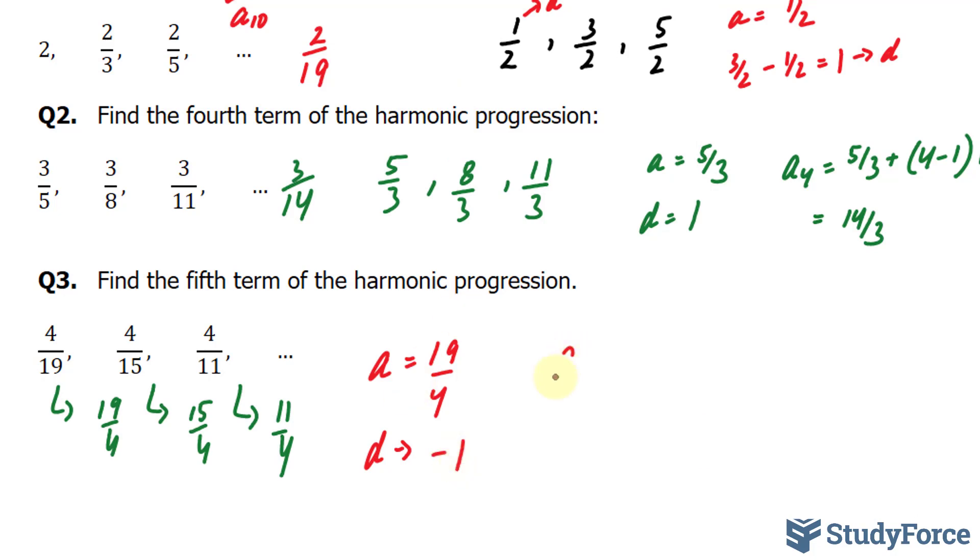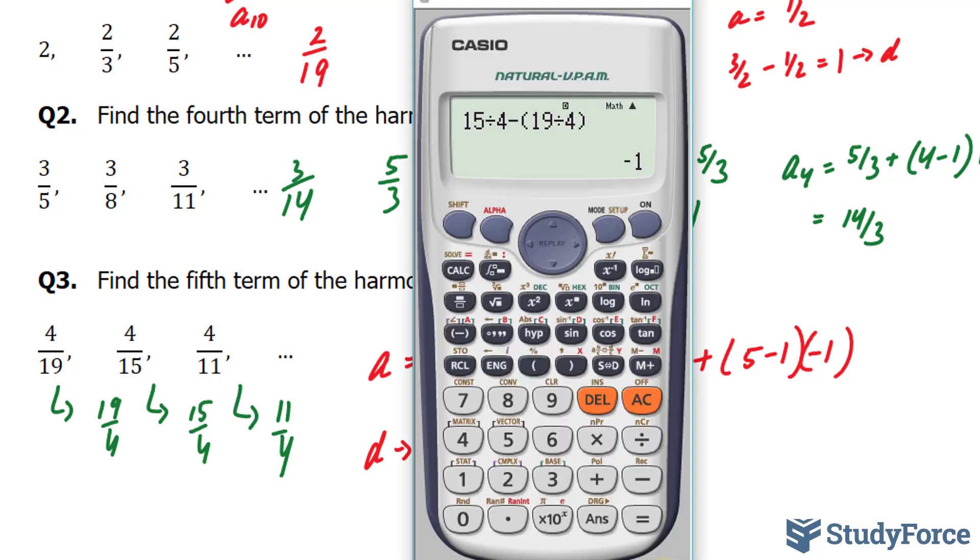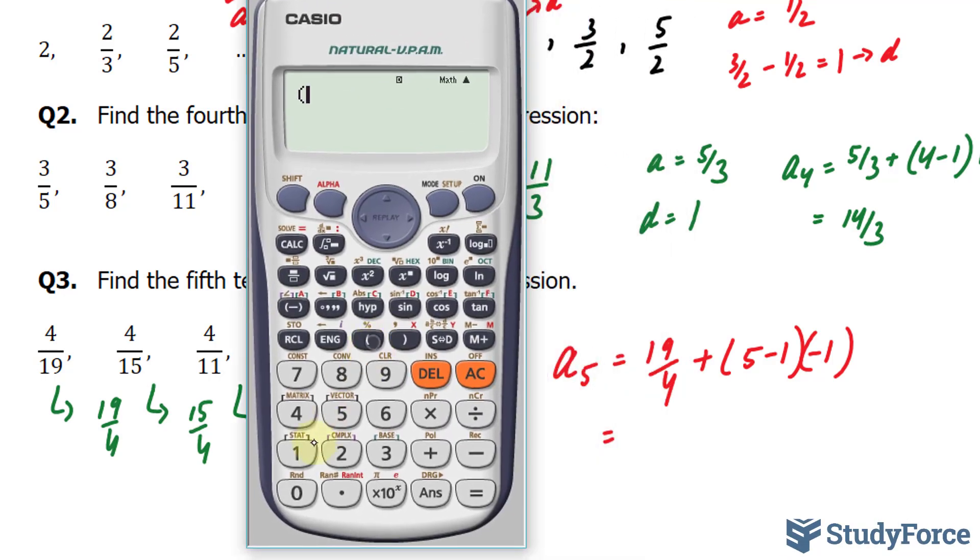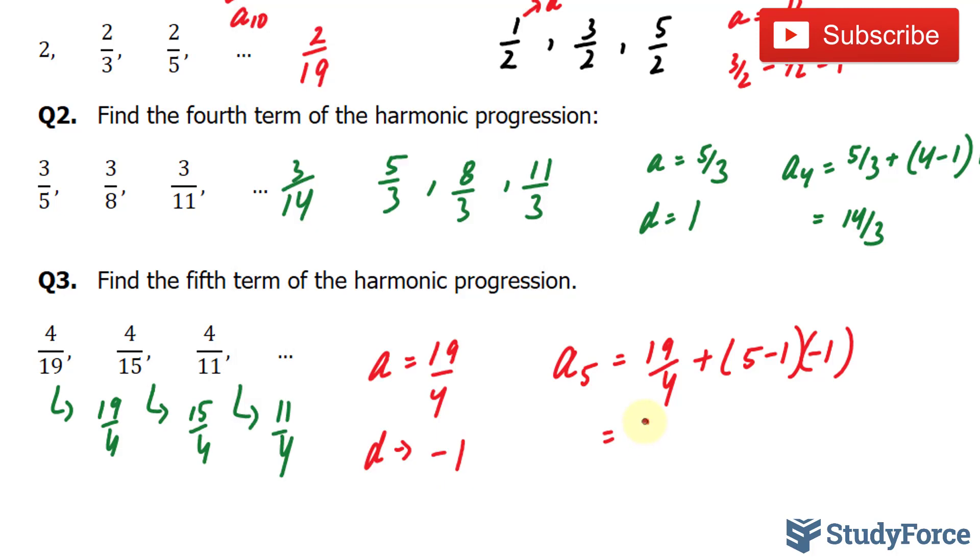Substituting these values, a subscript 5 is equal to 19 over 4. Therefore, my starting value plus the fifth term minus 1 times negative 1. I'm going to use my calculator once more. 19 over 4 plus 4. Times negative 1. Multiply the 4 with the negative 1. It gives me 3 over 4.